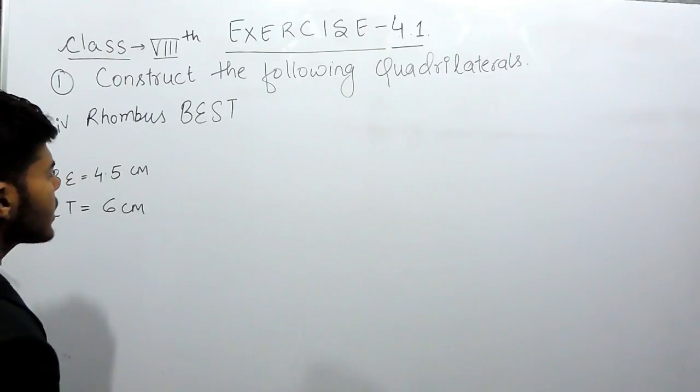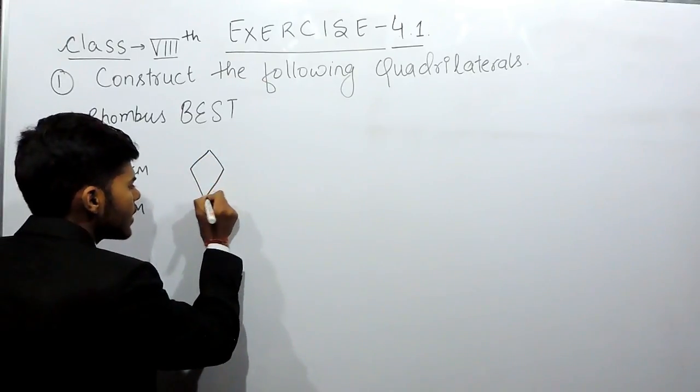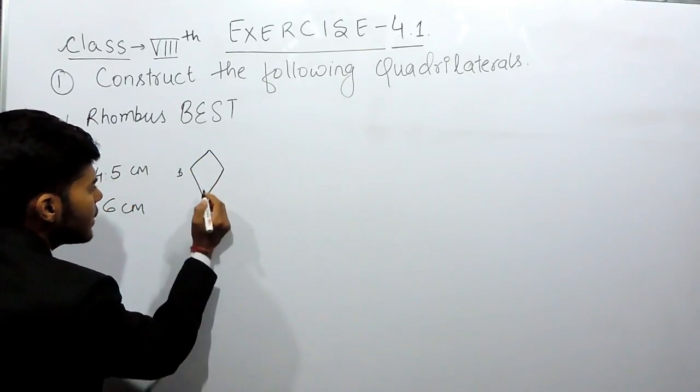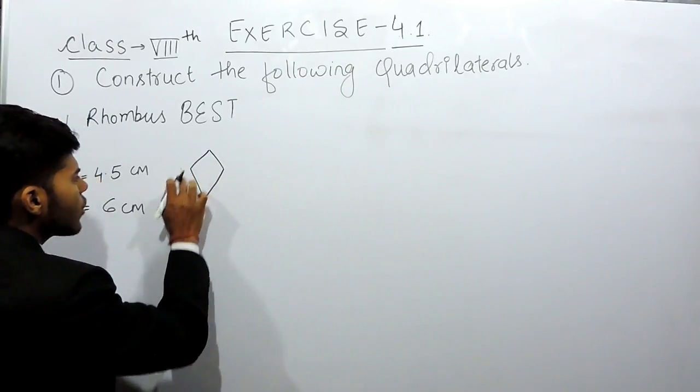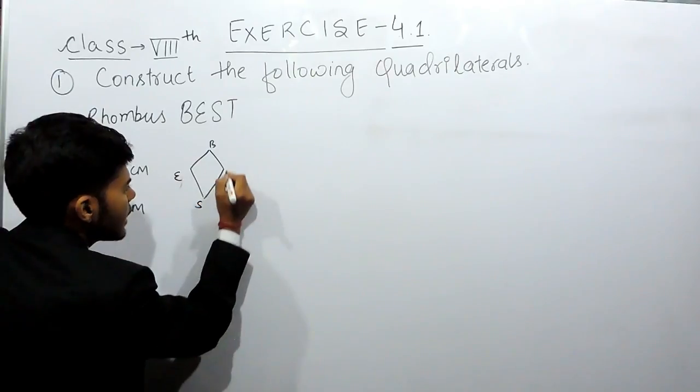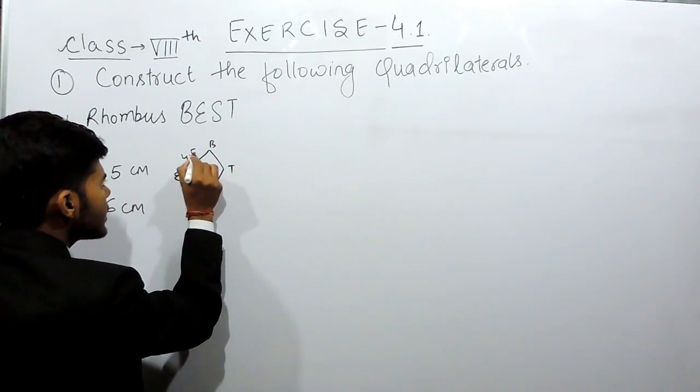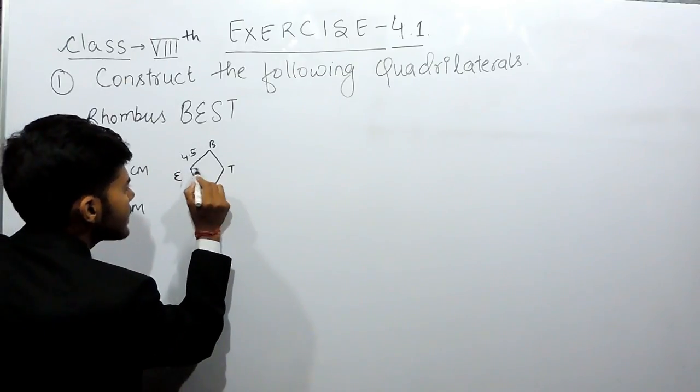So first of all we will construct the rough figure. It will be somewhat like this. We can name this like B, E, S, T. We are given that BE is 4.5 cm and ET is 6 cm.